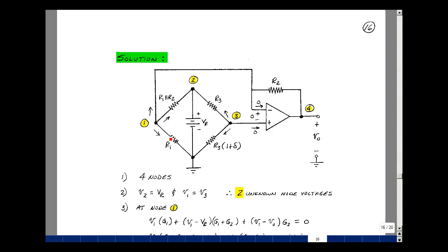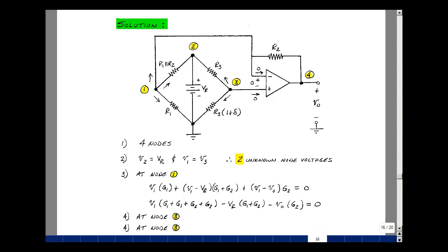I'll let all the currents leave the node here, but that's an arbitrary decision. The current leaving the node here would be the voltage V1 divided by R1 or times G1. The current in this parallel combination would be node voltage 1 minus node voltage 2, which is equal to V sub R. And then R1 in parallel with R2 would just be the sum of the conductance reciprocal. So dividing by that resistance in parallel would be the same as multiplying by G1 plus G2.